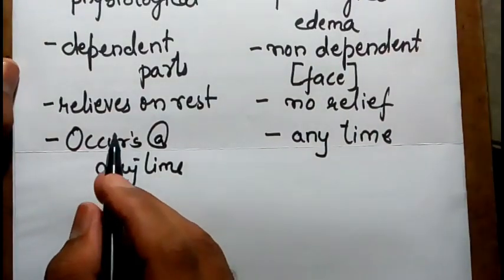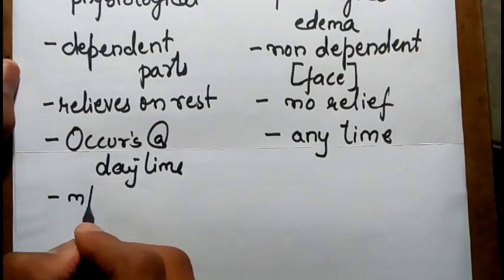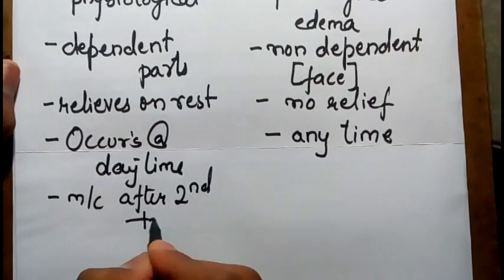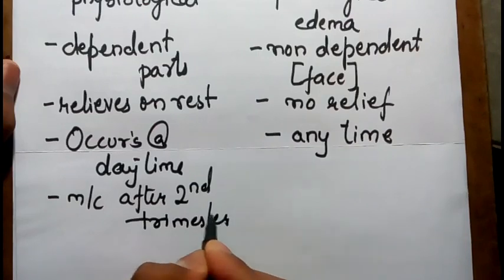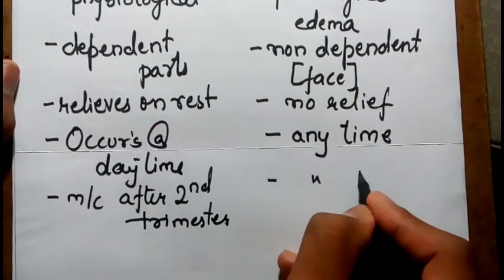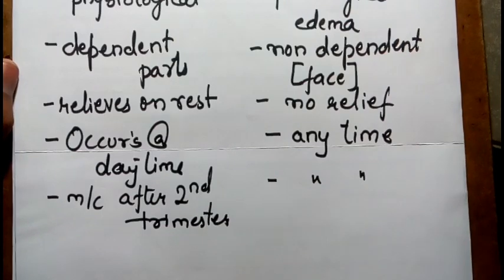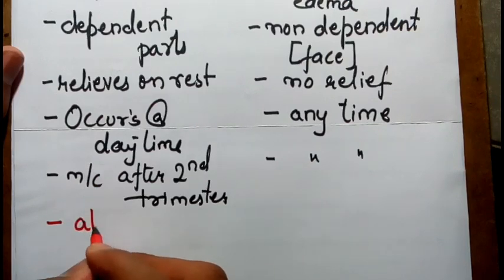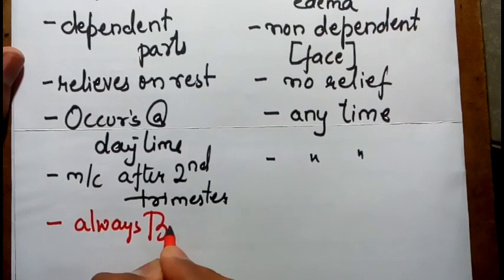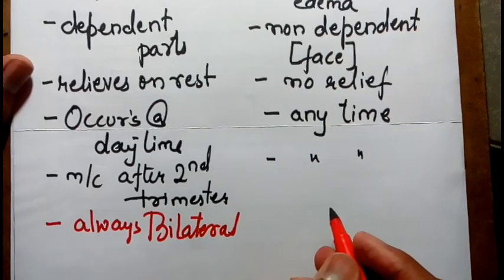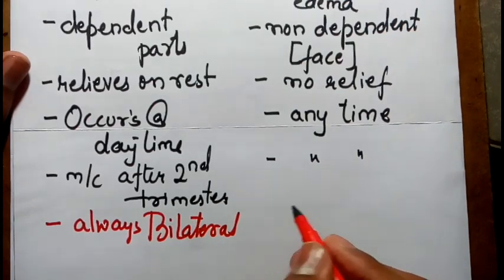Physiological edema is most common after the second trimester, whereas pathological edema can be seen at any time. Regarding laterality, physiological edema is always bilateral, but pathological edema may or may not be unilateral or bilateral.